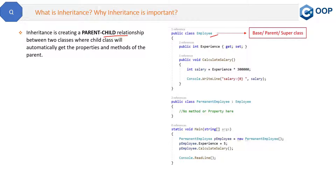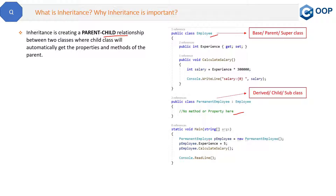Then we have this PermanentEmployee class which is a child class. Again, derived class, child class, and subclass are the same thing. Notice that the PermanentEmployee class does not have any method or property inside it.